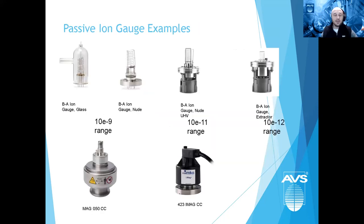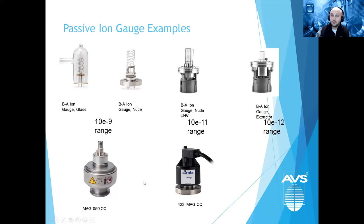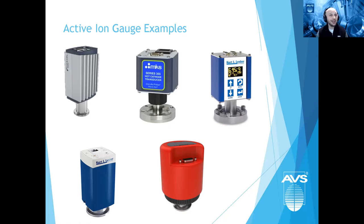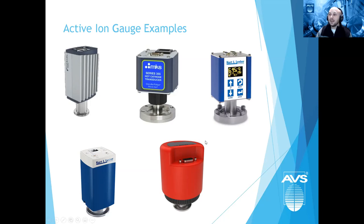There are different styles of hot filament ion gauges: Bayard-Alpert (BA) ion gauges, nude UHV, and extractor gauges which get you very low in vacuum. There are also passive cold cathodes. Active ion gauges come with serial communications, integrated displays, analog outputs, EtherCAT, Profibus, and more. If you need an integrated display or a specific communication interface, there's a manufacturer that has it. For drop-in replacements, you need to match the electrical connection and analog/digital output.